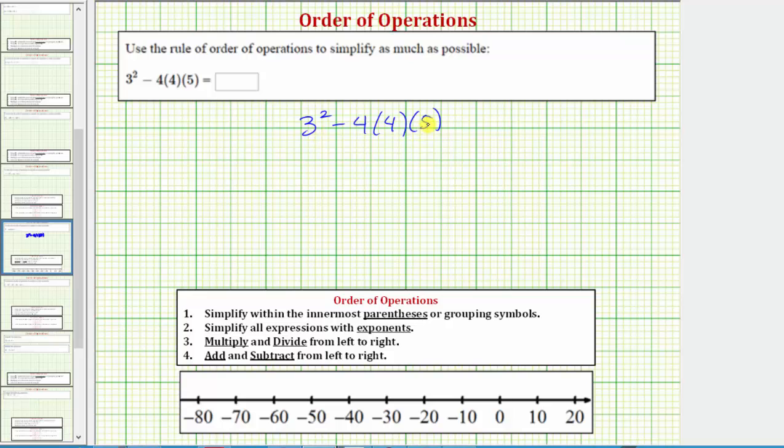Following the order of operations, for the first step we simplify inside the parentheses or grouping symbols, but for this expression there's nothing to simplify inside the parentheses, so we move to step two. Step two, we simplify all expressions with exponents.